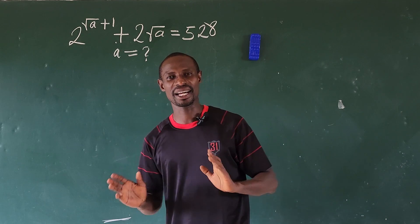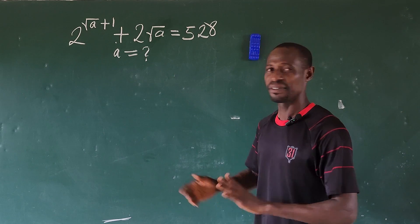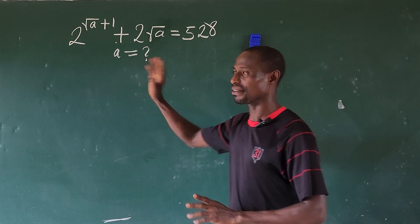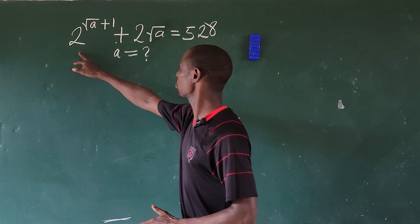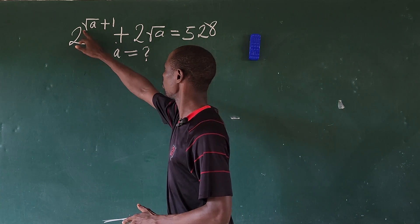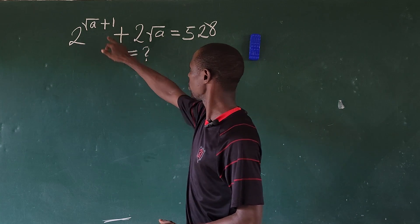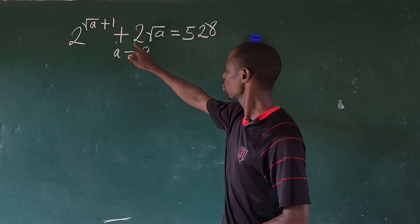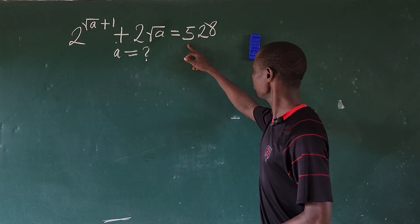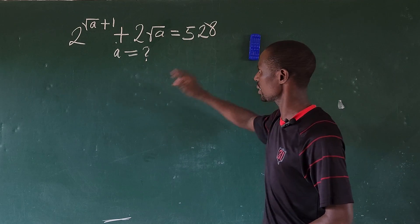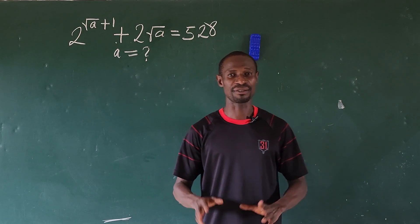Hello, welcome to another class. Before us here we have a math challenge. The question is: 2 to the power of (root a + 1) plus 2 root a, equal to 5 to 8. What is the possible value of a that will satisfy this expression?